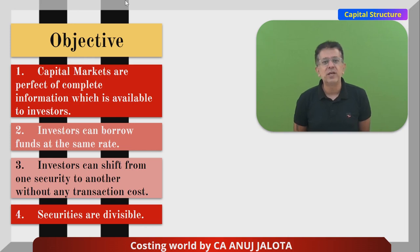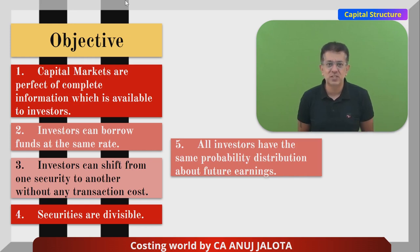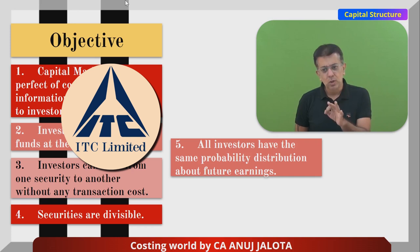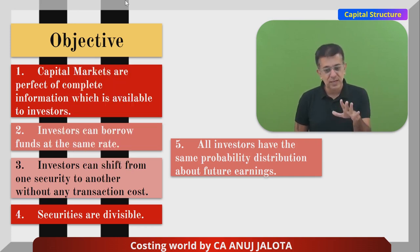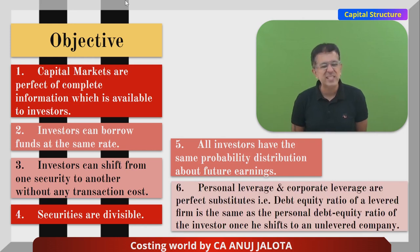Assumption number four: securities are divisible — even fractional shares are acceptable, like buying 120.32 shares. Assumption number five: all investors have the same probability distribution about the future. If I think a company like ITC will do well in future, all other investors also think the same way. So if you believe a company will do good, this theory assumes all investors believe that too.